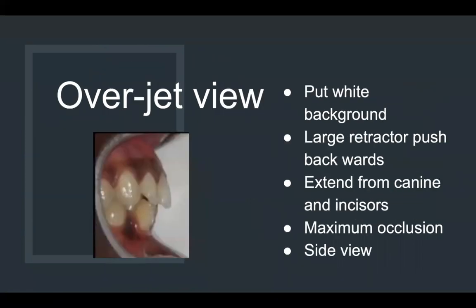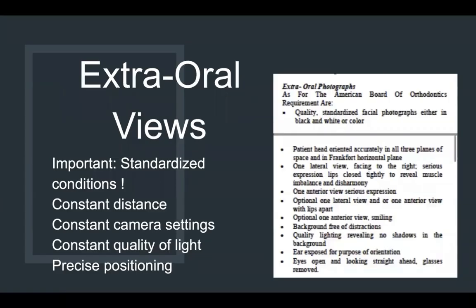For the overjet view, you're taking a buccal picture, so you bend your retractors. Put a white background — ask your assistant to hold a white background — and take the picture at 90 degrees. You can see the overjet and you see one incisor, not two, and you can measure the overjet perfectly. Put the white background first, then use a large retractor and push it backwards, then extend the picture from canine to incisor. You need to see the canine and incisors in maximum occlusion from the side at 90 degrees. This all comes with practice — the more you practice your photography, the more you get the angles.